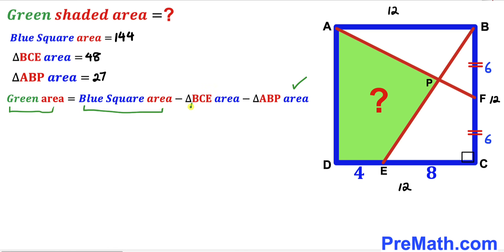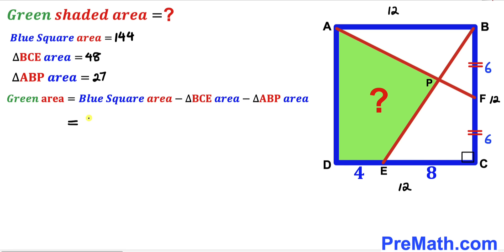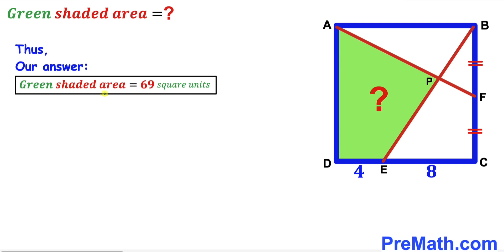Recalling our equation: green shaded area equals blue square area minus triangle BCE area minus triangle ABP area. Substituting: 144 minus 48 minus 27, which equals 69 square units. Thus the area of this green shaded region is 69 square units. Thanks for watching and please subscribe to my channel for more exciting videos.